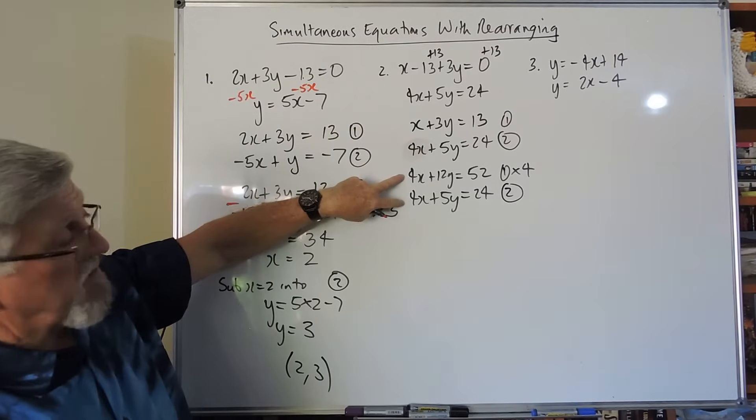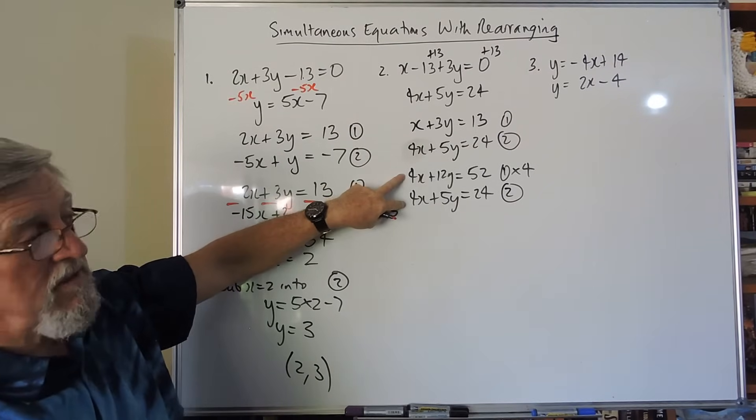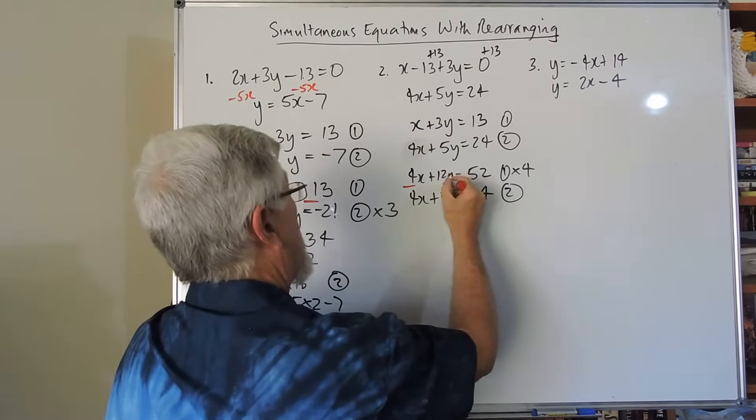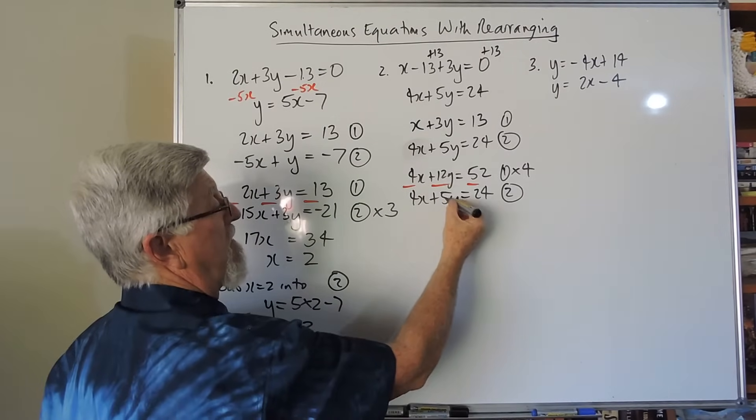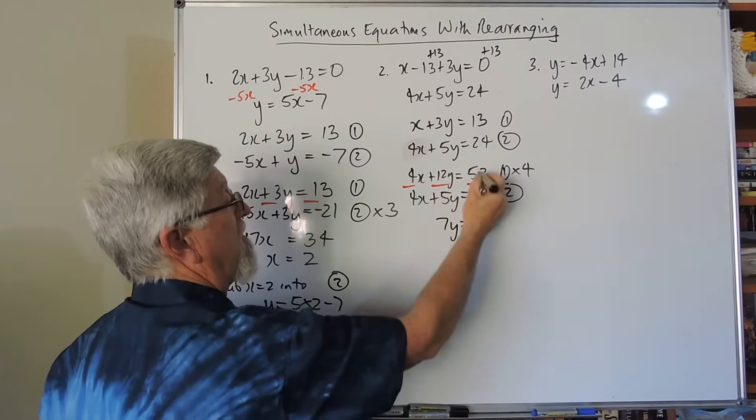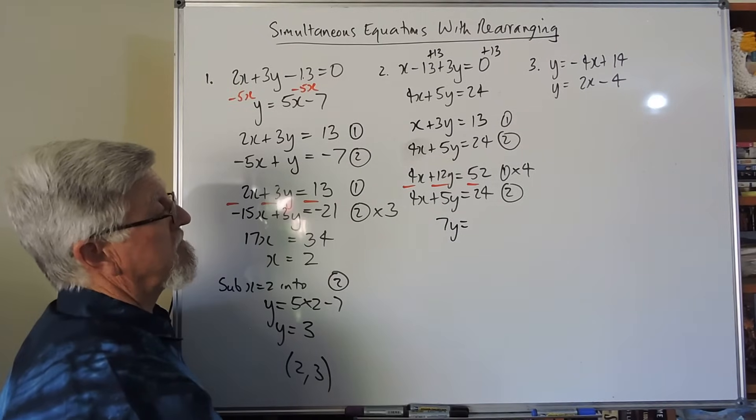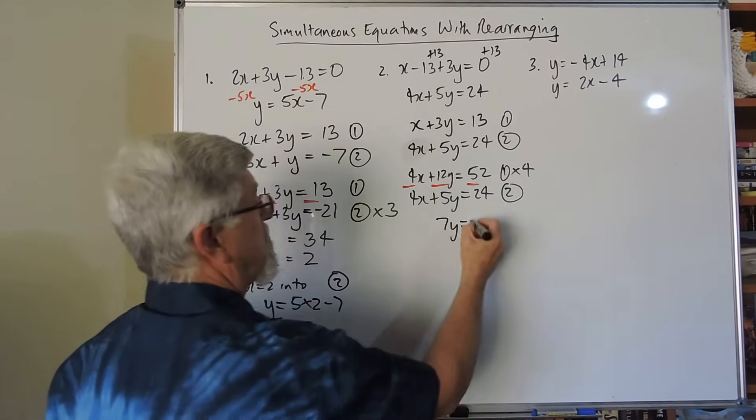So now I've got the 4x is the same. Same sign, same size, subtract. So now I can put in my subtracts. I still do prefer a different coloured pen. 12y, take 5y is 7y. 52, take 24, it's 28.